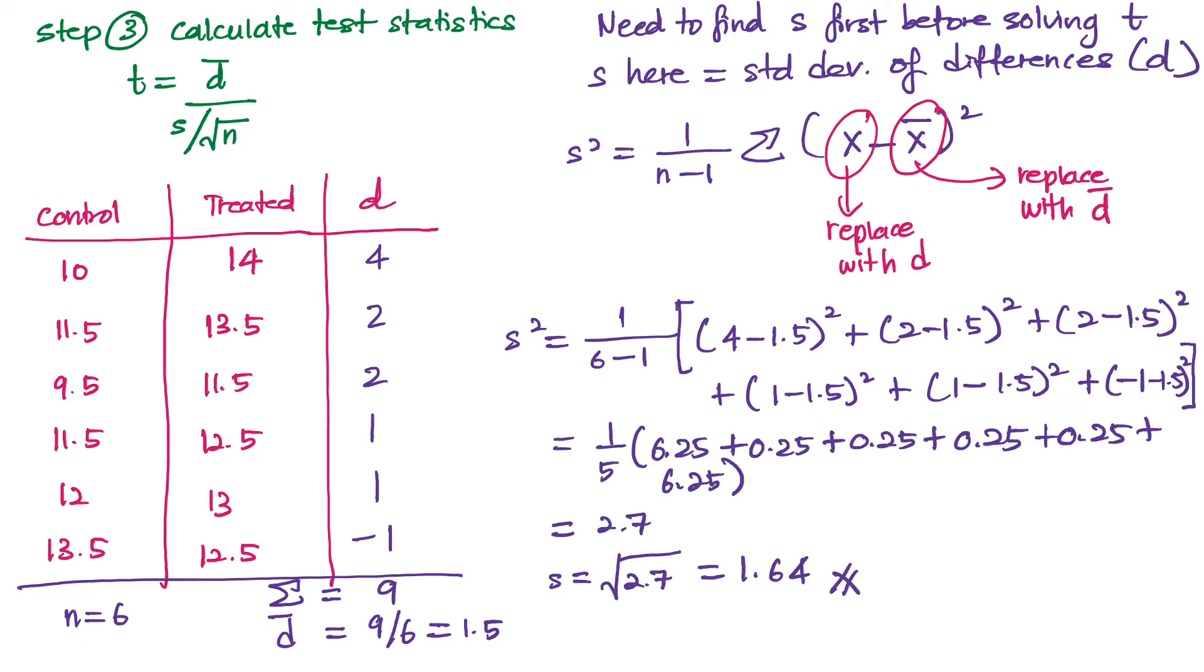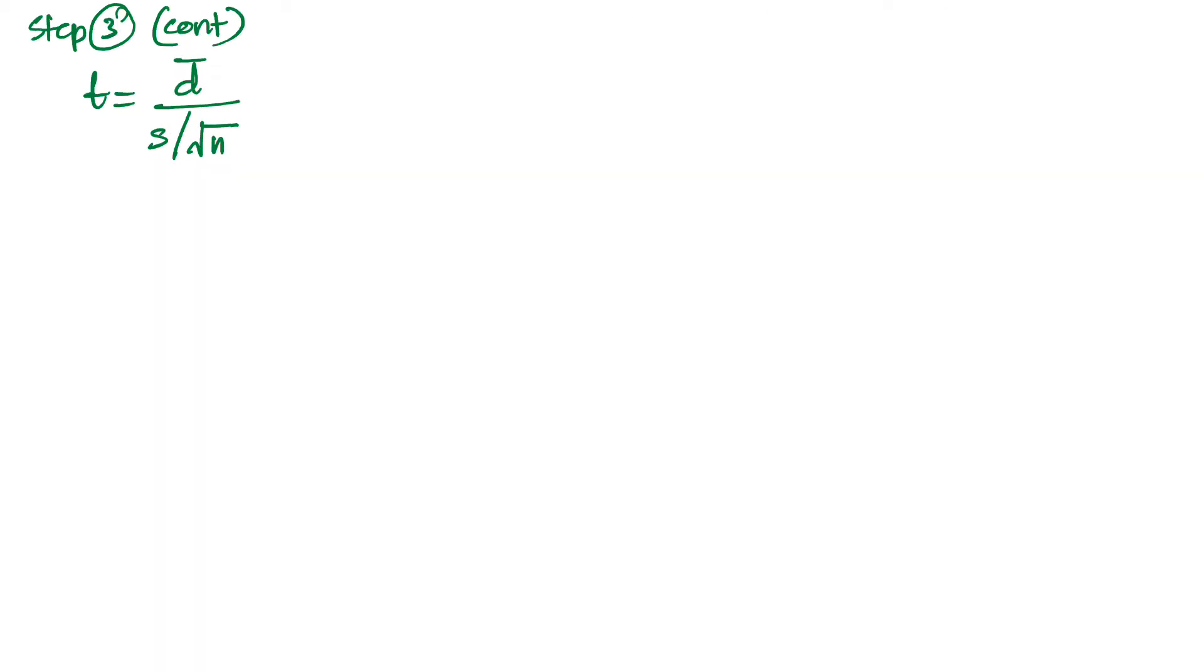Plugging in all the values needed, so we can find the s value at the end as 1.64. Now knowing what is d-bar and s and also n, so we can plug in the values into the t formula.